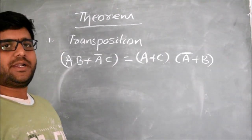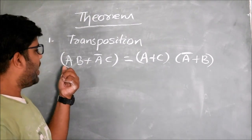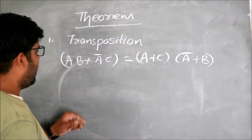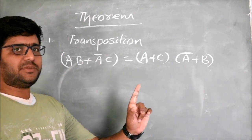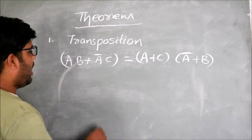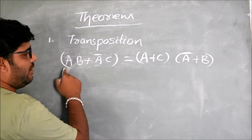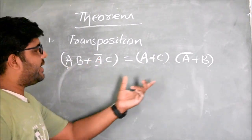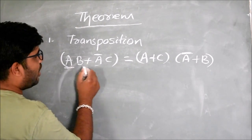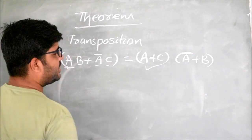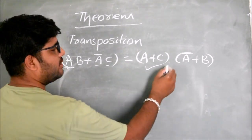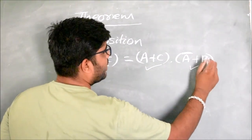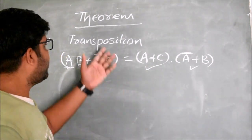Another theorem is the Transposition Theorem. It says that when AB OR A̅C, here you can see three literals A, B, C, where one literal A is available in both places — once in normal form and once in complemented form. In this case, this can be written as: A OR C, ANDed with A̅ OR B. This is the Transposition Theorem.